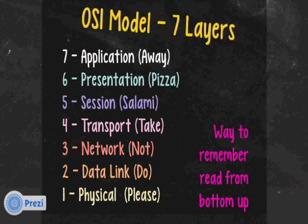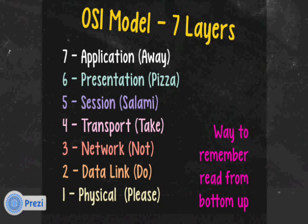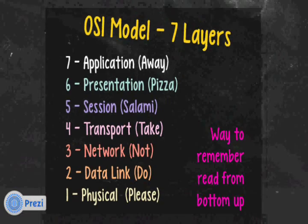The OSI model has seven layers. We always present it this way: layer seven at the top, layer one at the bottom. Layer seven is the application, layer six is the presentation, layer five is the session, four is transport, three is network, two is data link, one is physical. 'Please do not take salami pizza away' — it's a good way to remember this when you first start out.